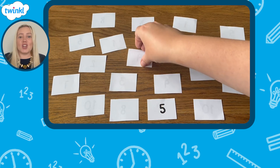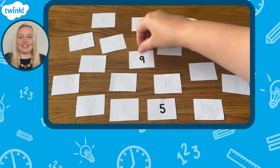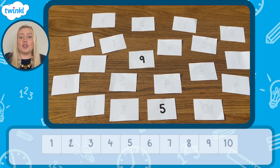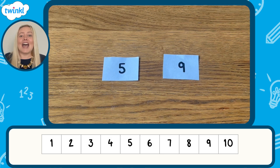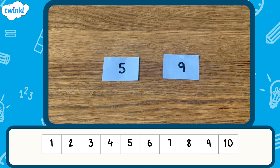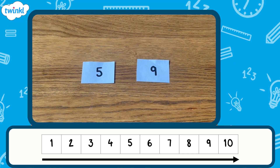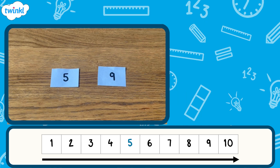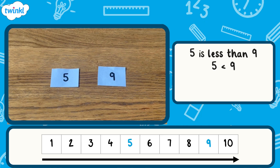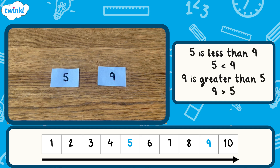This time I've turned over the numbers 5 and 9. I'm going to use a number track to help me compare the numbers. As we move along the number track, the numbers increase in value. I can see that 5 comes before 9, which tells me that 5 is less than 9 and 9 is greater than 5. Here are two statements using the greater than and less than symbols to compare the two numbers.